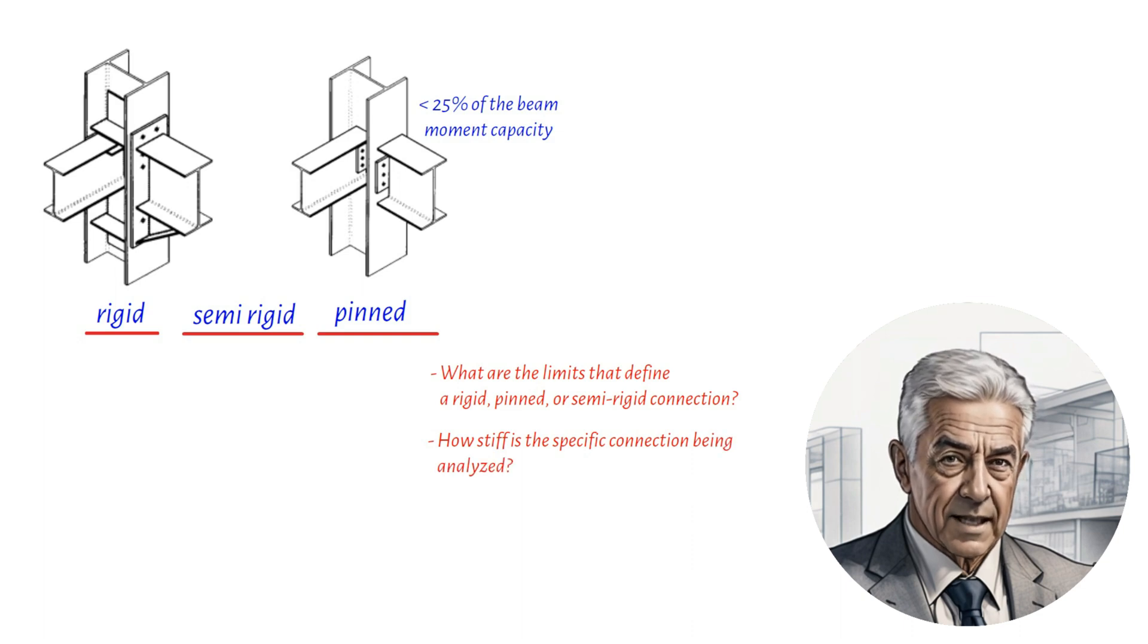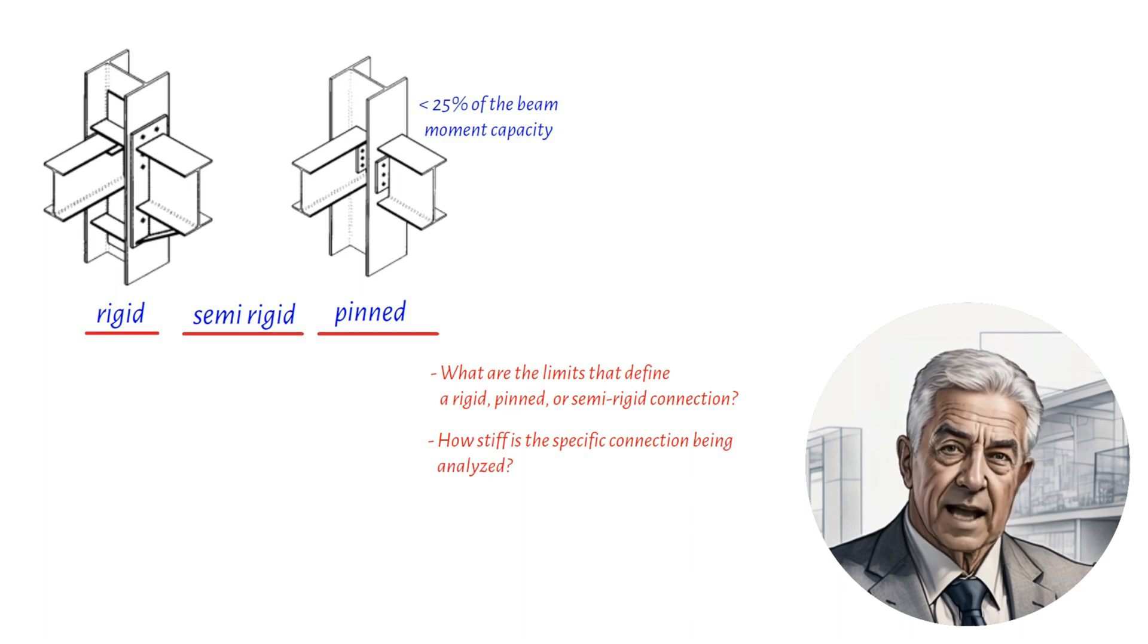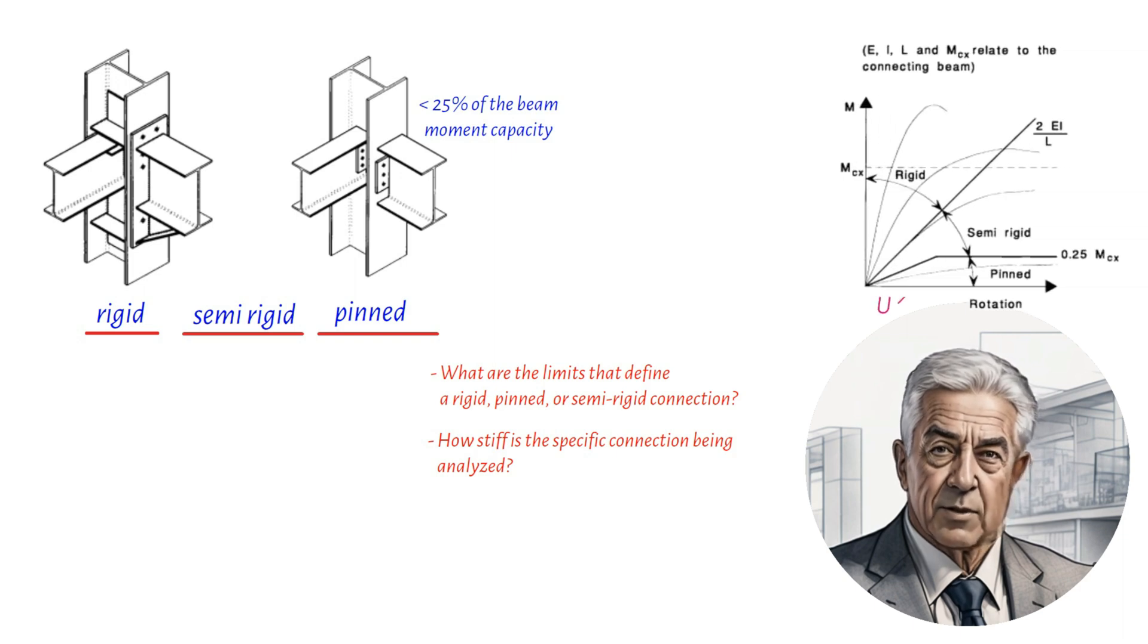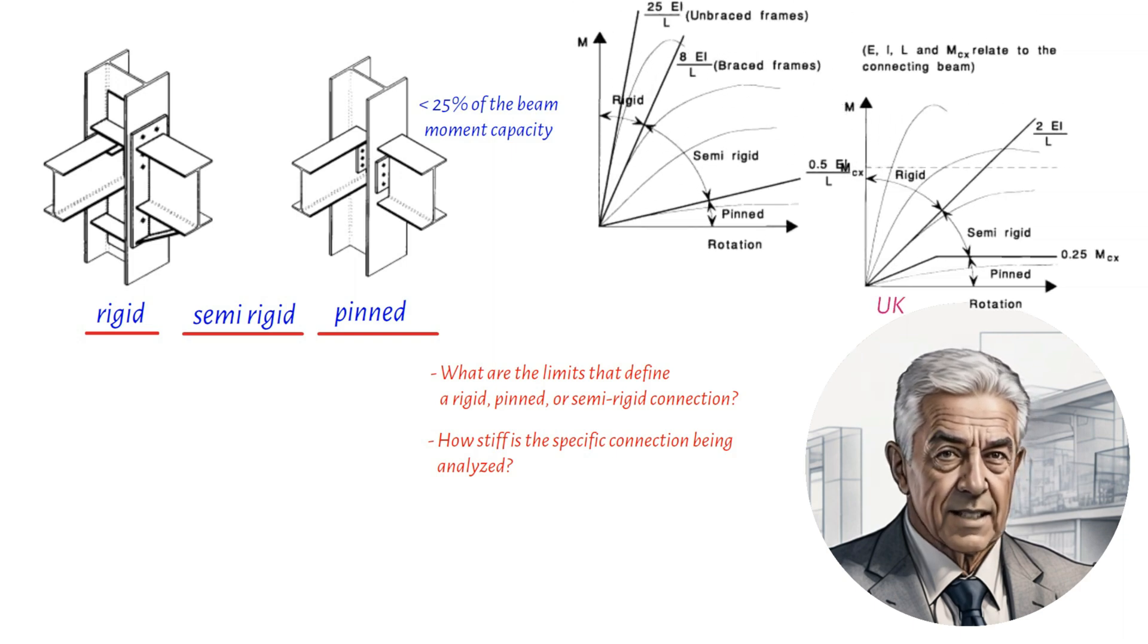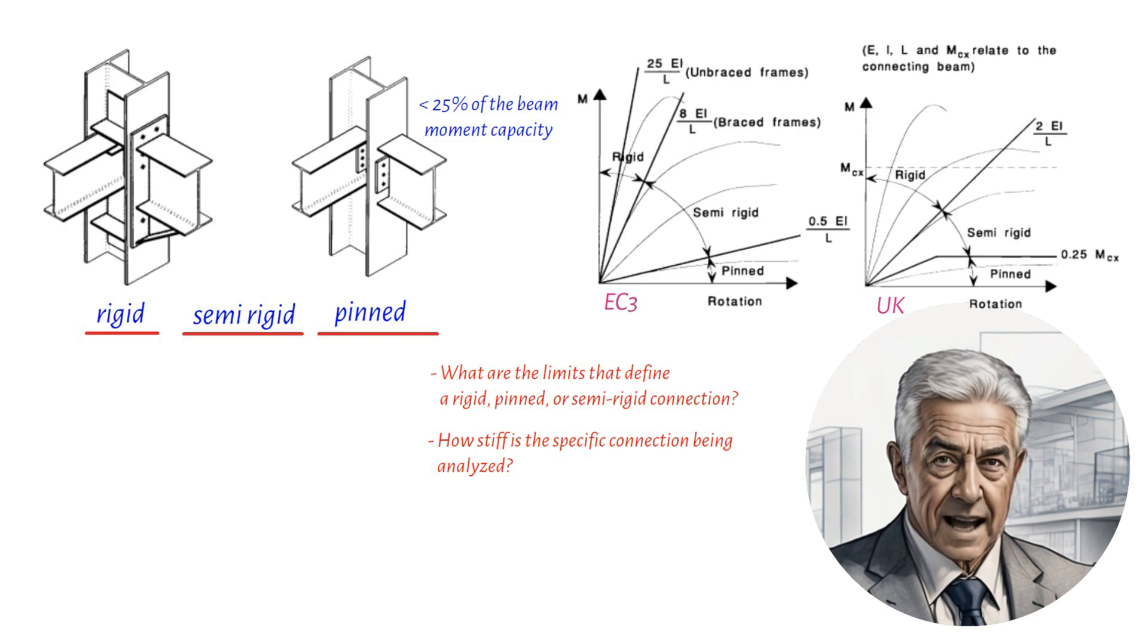To determine the stiffness limits, moment rotation curves are used to differentiate between rigid, semi-rigid, and pinned connections. However, there is no consensus on the slope of these dividing lines. For instance, in the UK, the slope of 2 times EI divided by L has been suggested as the division between rigid and semi-rigid,